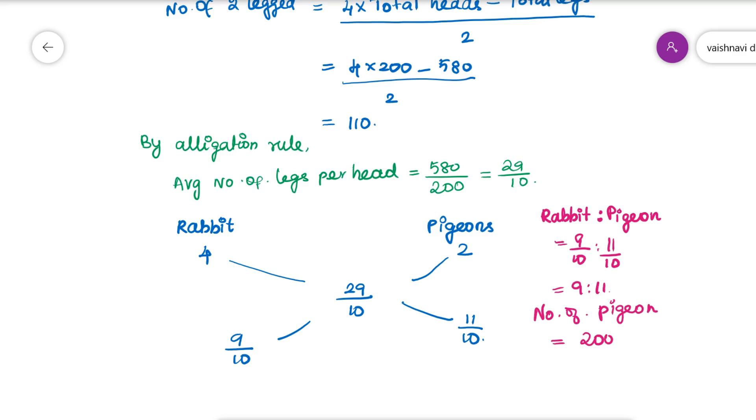The number of pigeons can be found as total 200 divided by 9 plus 11, into 11, that is 110. You can solve by both the methods, anything as you wish. Thank you.